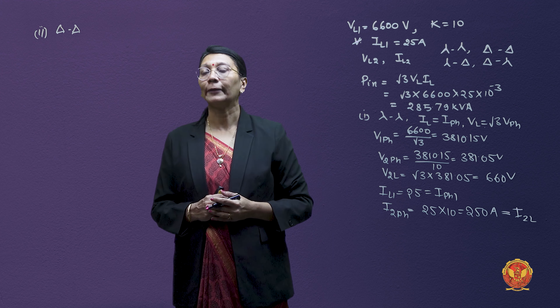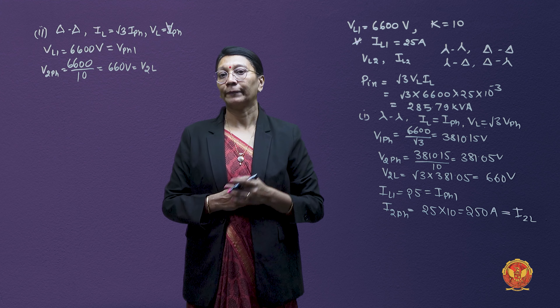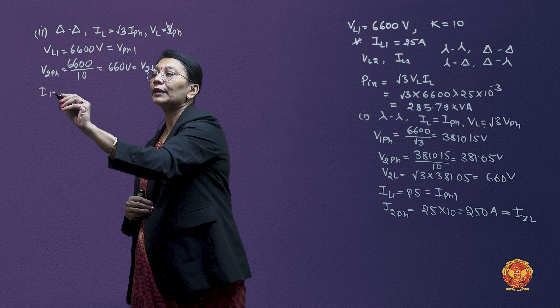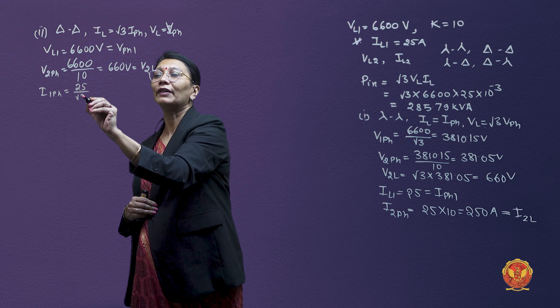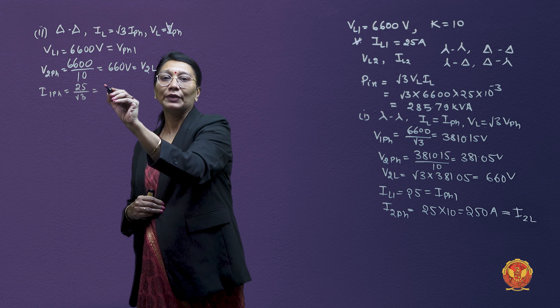For the delta-delta current calculation: in delta, phase current = line current ÷ √3. The primary line current is 25 A, so the primary phase current = 25 ÷ √3. The secondary phase current I2 phase = (25 ÷ √3) × 10. The secondary line current I2 line = √3 × I2 phase = (25 ÷ √3) × 10 × √3 = 250 amperes.